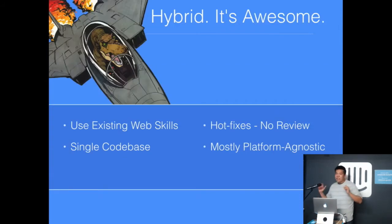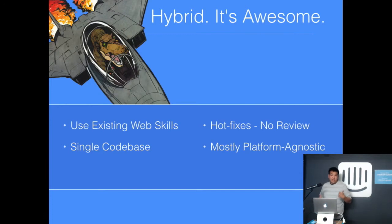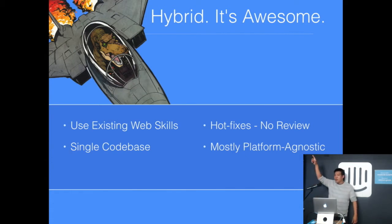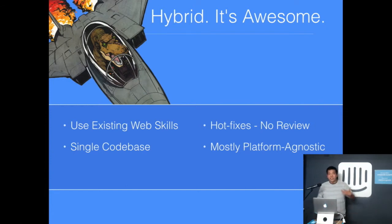Hybrid is awesome. Some of the advantages of hybrid app development over native are: one, you get to reuse your existing skills as a web developer and JavaScript developer. You can take all of your years of experience with HTML, CSS, and JavaScript and extend into the mobile space. It can be valuable to you as a developer as well as to your company. It can also be very valuable to companies because it can be very difficult and expensive to build a team of native app developers, whereas many companies already have a team of web developers in house.